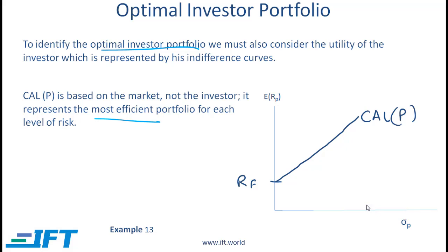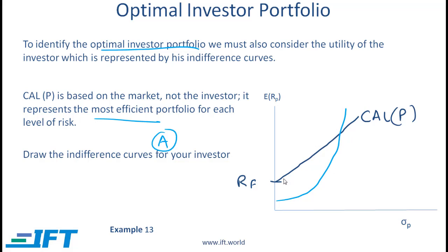The question is: what is the optimal portfolio for the investor? For that we need to understand the risk aversion level — the A — for the investor and draw his indifference curves. We will create these indifference curves, and the point where the investor's indifference curve is tangential to the capital allocation line represents the optimal portfolio for the investor. That is the point where we have the highest indifference curve that touches the CAL, making the investor as happy as possible.